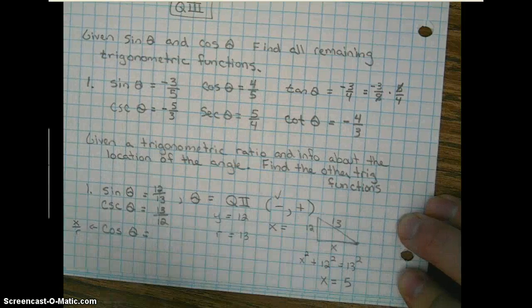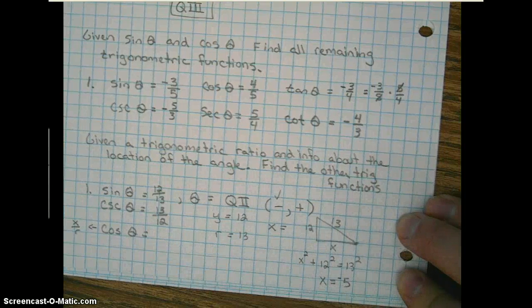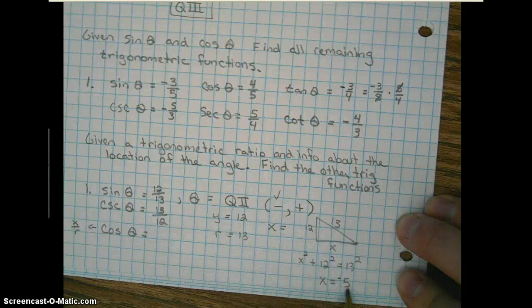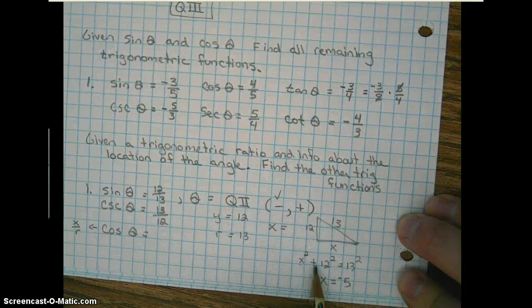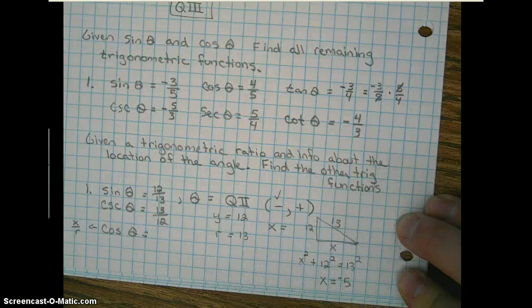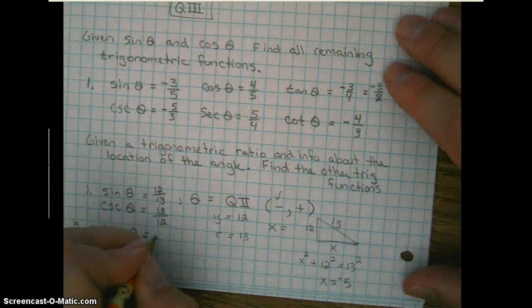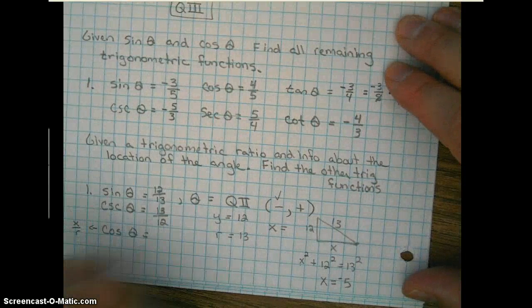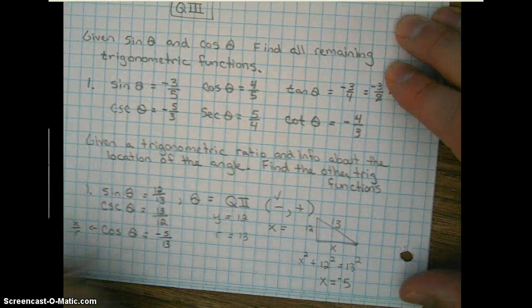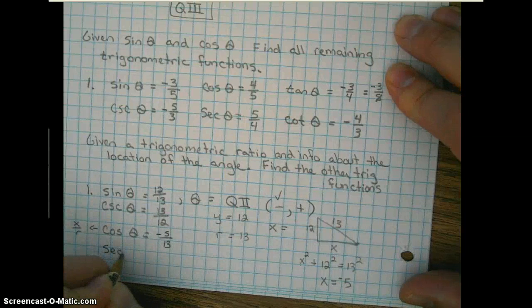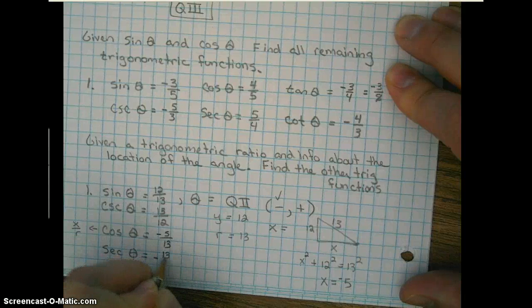But notice, x has to be negative. So our x value will be negative 5. Does that work? Negative 5 squared is 25. 25 plus 144 is 169. So now we know x is negative 5. So we're going to use our definition, negative 5 over our radius, which is 13. Do the reciprocal function, negative 13 fifths.